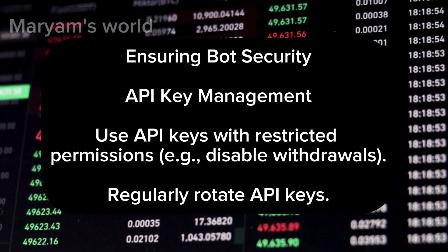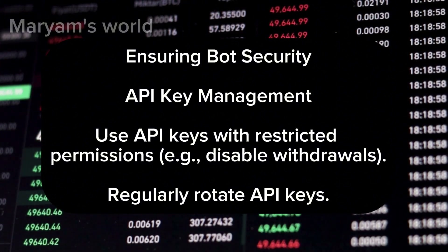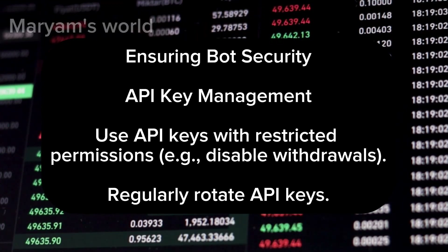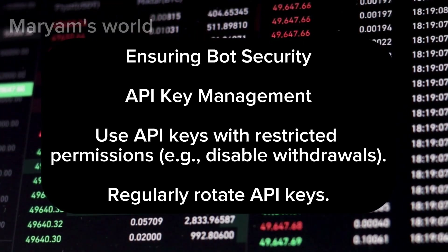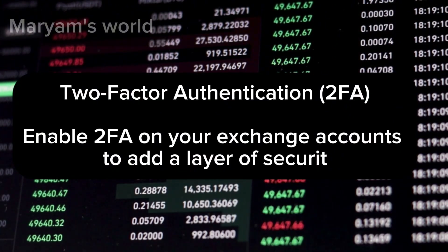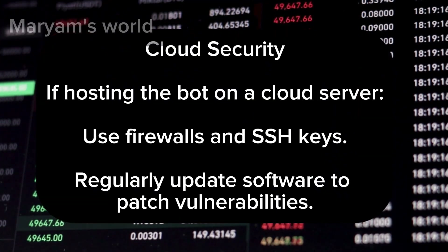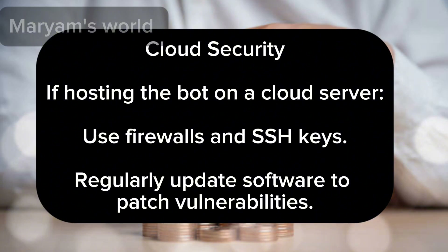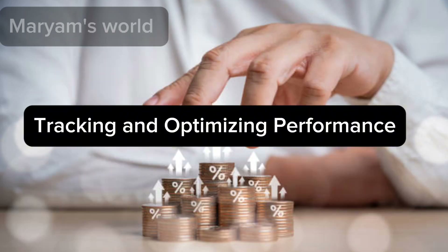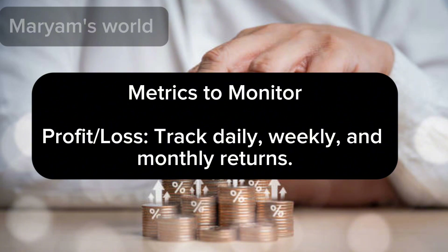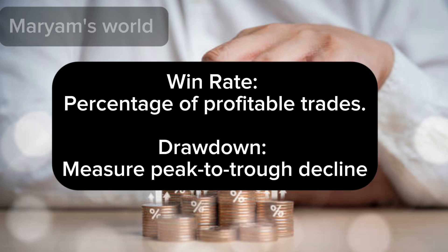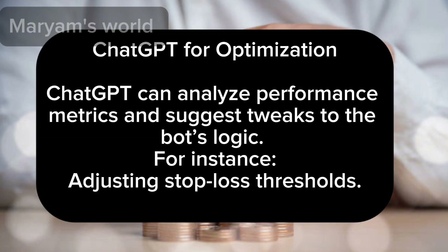Backtesting: before deploying, simulate the bot's performance using historical data to evaluate profitability. For bot security, use API keys with restricted permissions (for example, disable withdrawals) and regularly rotate API keys. Enable two-factor authentication (2FA) on your exchange accounts. If hosting on a cloud server, use firewalls and SSH keys, and regularly update software to patch vulnerabilities. Track performance metrics including profit/loss, win rate, and drawdown. ChatGPT can analyze performance metrics and suggest tweaks to the bot's logic, such as adjusting stop-loss thresholds.